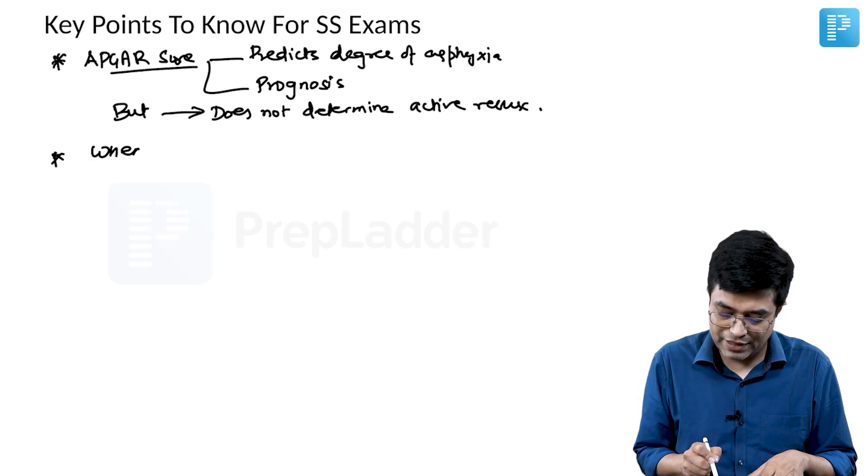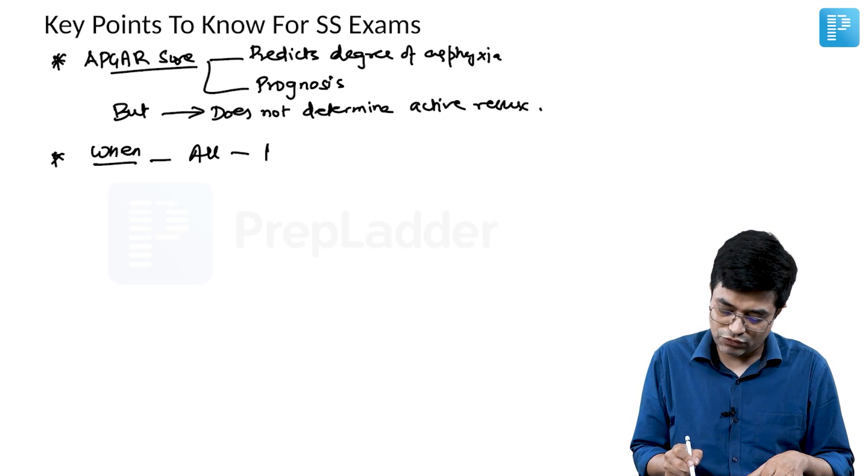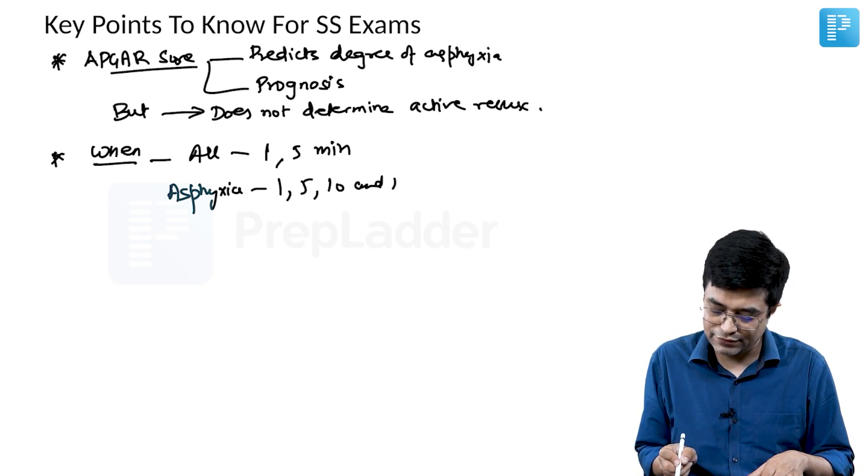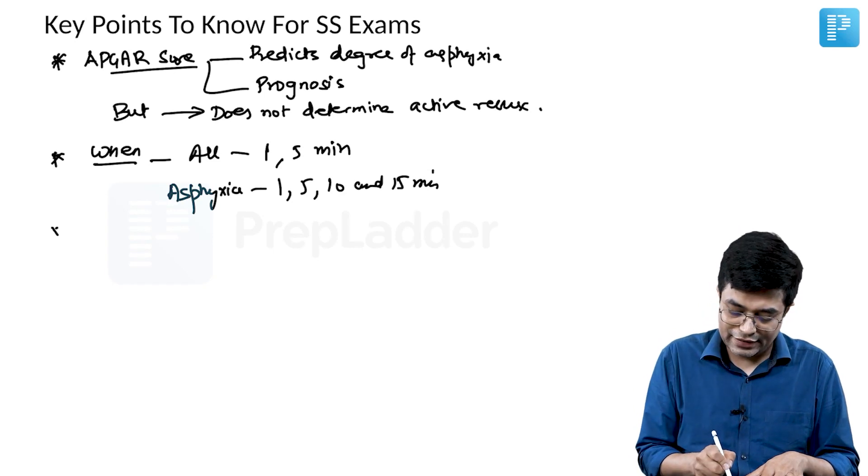When do you perform APGAR score? In all babies, you will do at 1 and 5 minutes of life. In all babies who are undergoing asphyxia, you will do at 1, 5, 10, and 15 minutes. Very rarely 20 minutes can also be done.